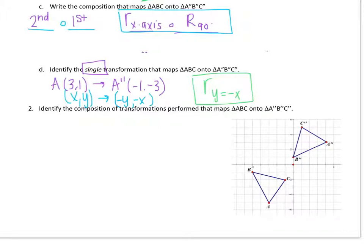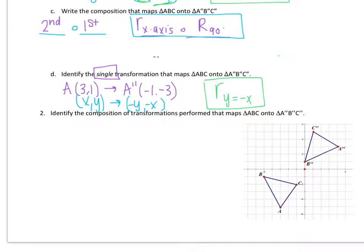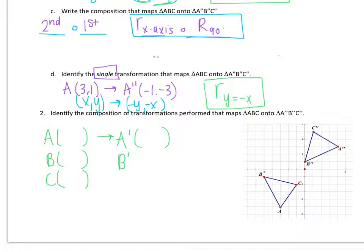The next problem asks us to identify the composition of transformations that maps the original triangle ABC onto the double prime triangle. When I look at this picture, I only have the original triangle ABC and the double prime triangle — I'm missing that middle step, the middle picture. So first I'll list the coordinates for A, B, and C, then I'll set up A prime, B prime, and C prime, which I don't know yet. I do know the coordinates for A double prime, B double prime, and C double prime.